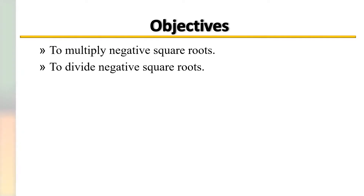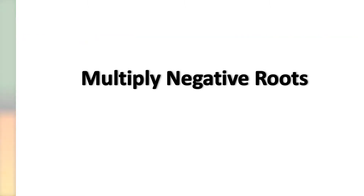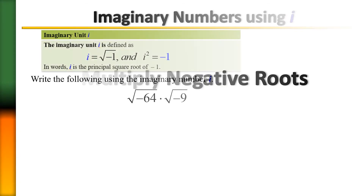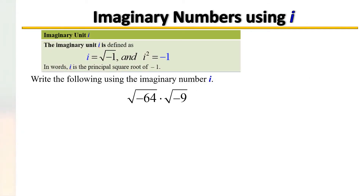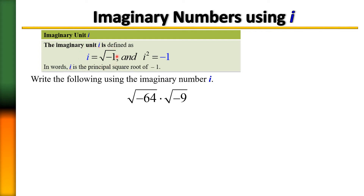In this lesson we're going to multiply negative square roots as well as divide them. Before we begin, remember that the square root of negative 1 equals i. There's also a new rule to remember: i squared equals negative 1. Every time you see i squared, you're going to replace it with negative 1.